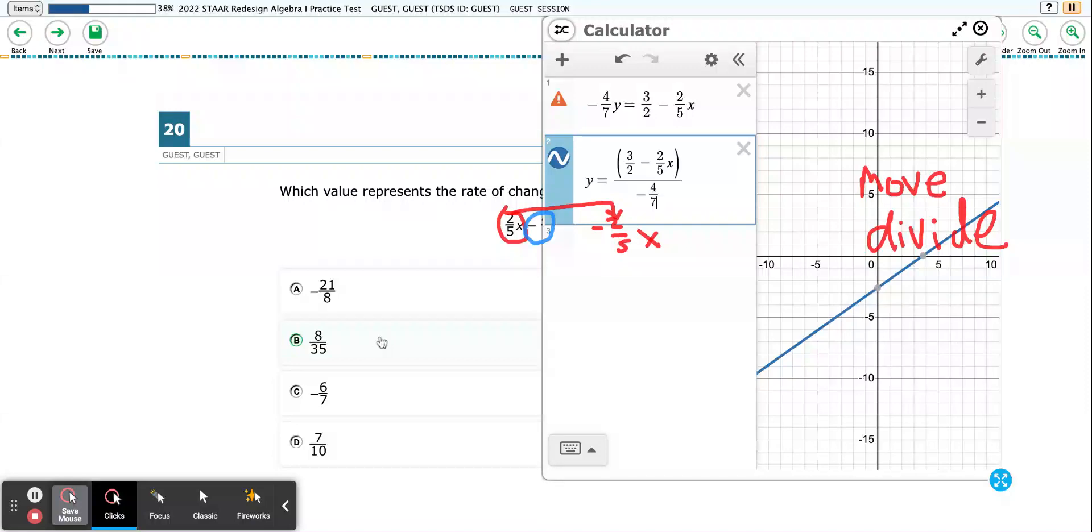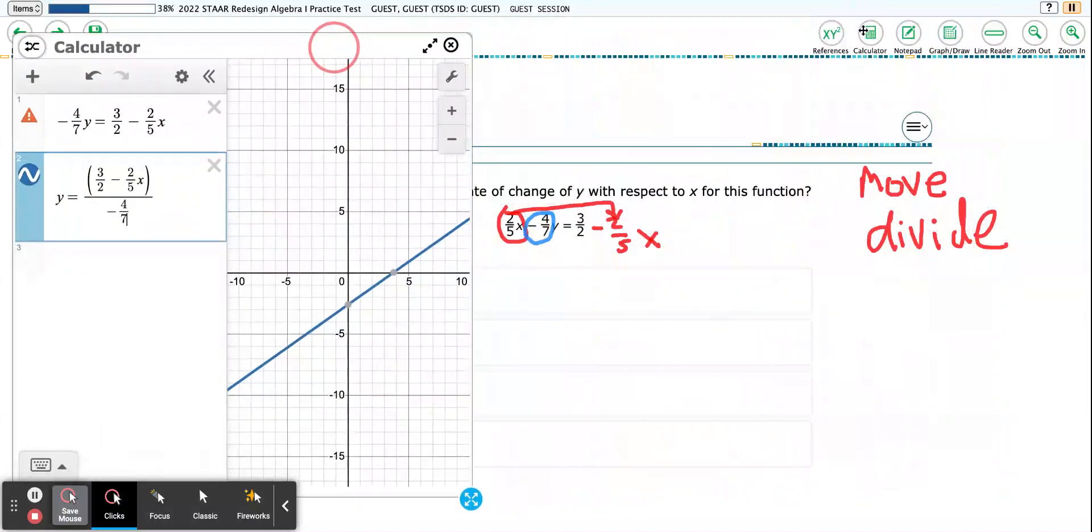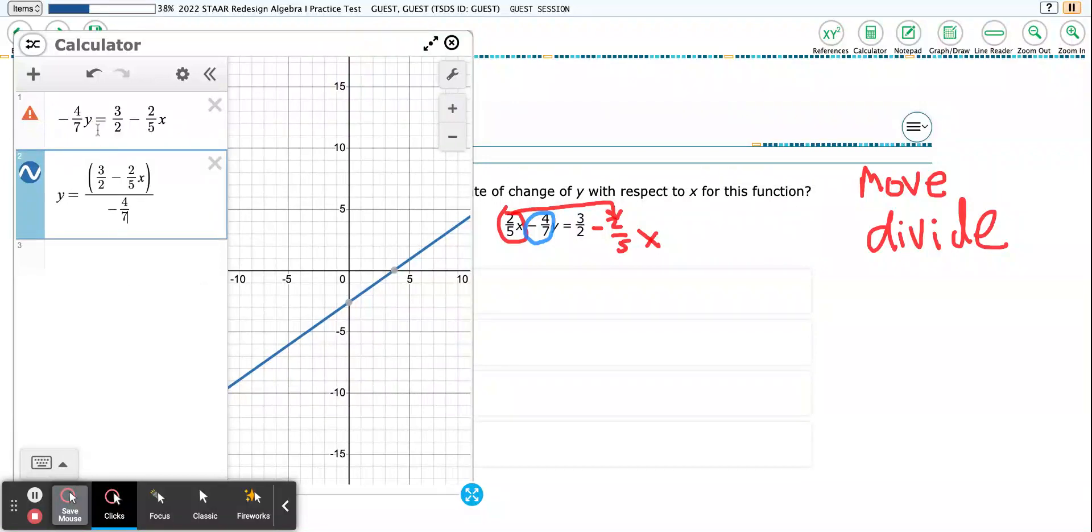B is positive and D is positive. Well, that's great, but that doesn't tell me what slope is. So I need slope, which is going to be this negative 2 over 5. I'm going to divide that by negative 4 over 7.